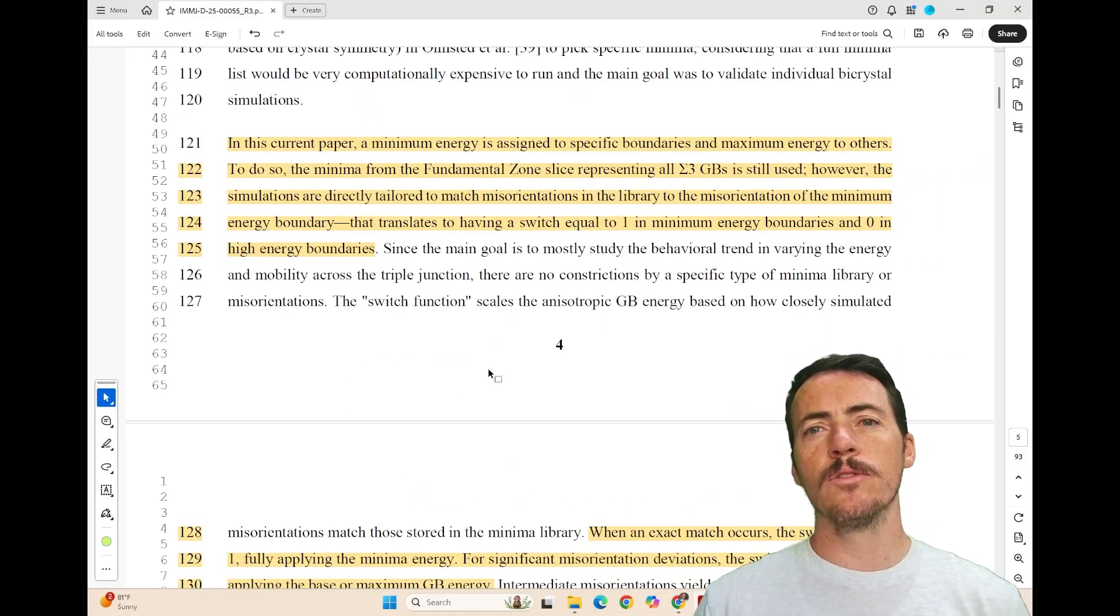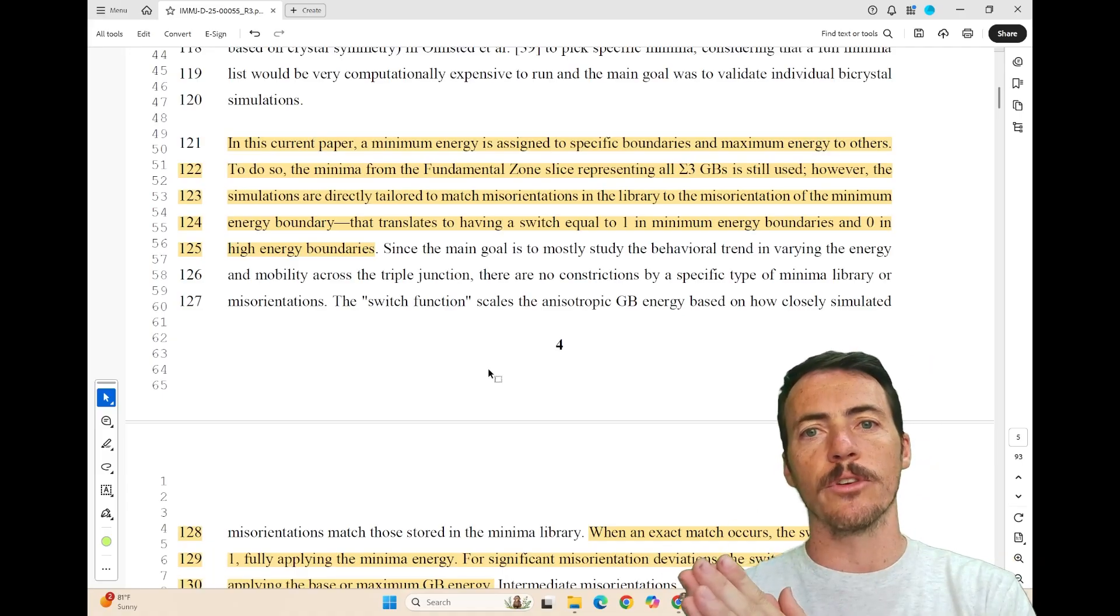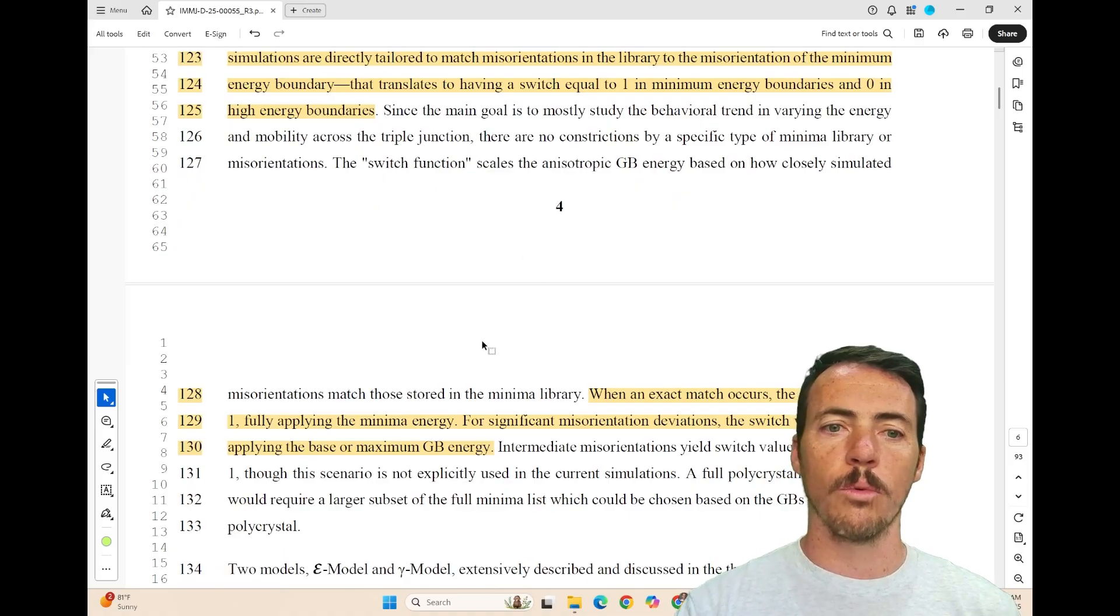One of the innovations in this paper is how they use those libraries. They essentially created a switch function. They do a calculation that allows us to say something is either similar or dissimilar to a known grain boundary orientation with its associated energy. So it's going to switch it to zero or one, could potentially be values in between.